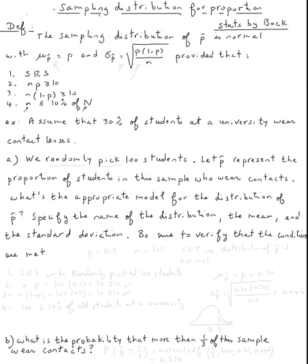Alright, so let's do this example. Assume that thirty percent of students at a university wear contact lenses. We randomly pick one hundred students. So first, we know that p, which is the proportion of the population, equals thirty percent or zero point three. We randomly pick one hundred students, so n, the size of our sample, is equal to one hundred.